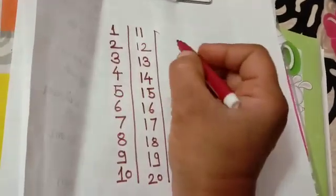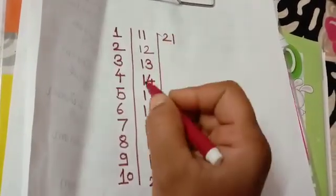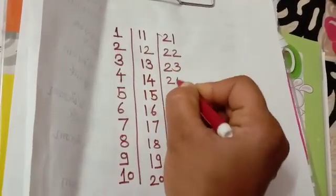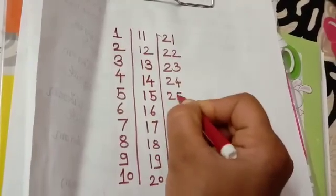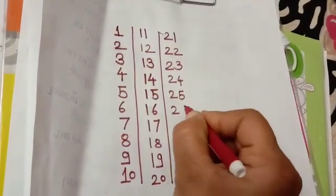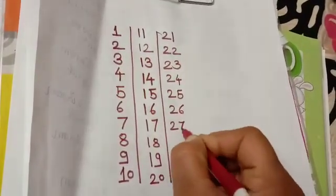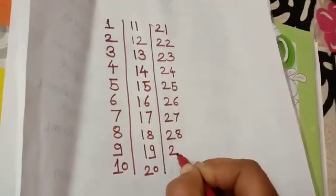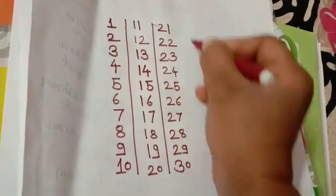Then 2-1, 21, 2-2, 22, 2-3, 23, 2-4, 24, 2-5, 25, 2-6, 26, 2-7, 27, 2-8, 28, 2-9, 29, and 3-0, 30.